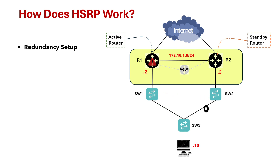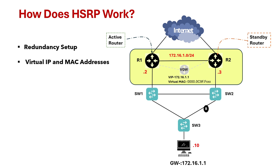HSRP uses a virtual IP address and a MAC address. The virtual IP address is what your network devices see as their gateway. In this setup the PC has been configured with gateway as 1.1, and the same IP has been configured as the virtual IP. It also assigns a virtual MAC address to the group, and the active router uses this MAC address to send and receive packets.